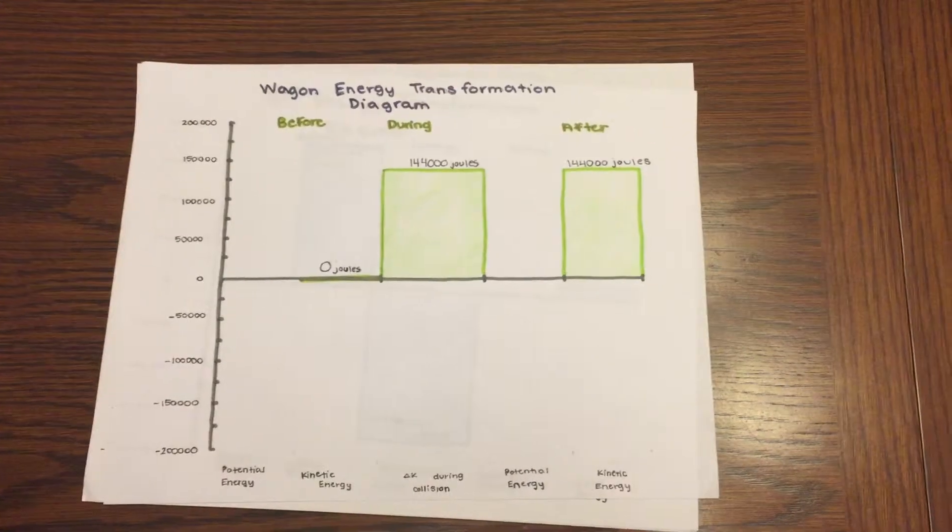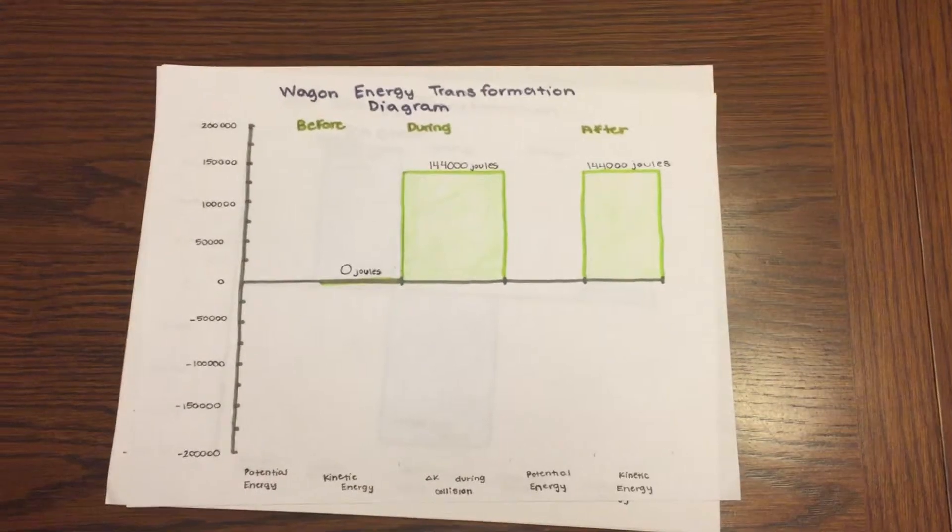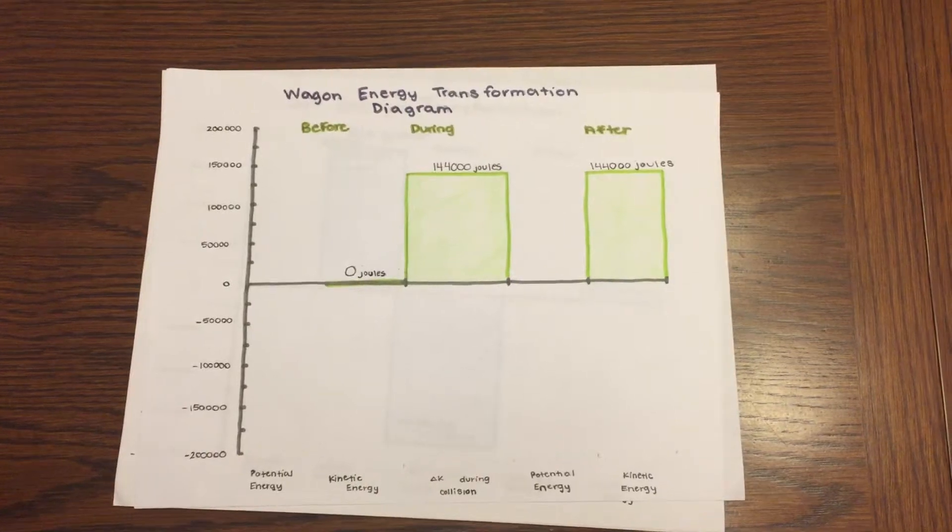The wagon, stopped at a light, contained no kinetic energy. The SUV at the collision worked on the wagon, increasing the kinetic energy of the wagon from 0 to 144,000 joules.